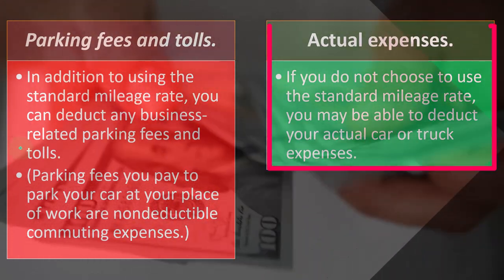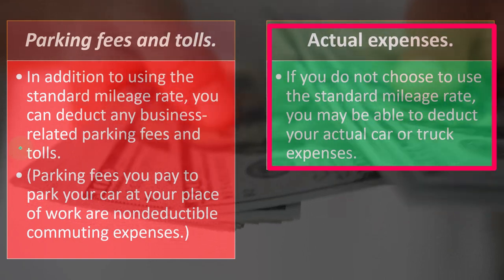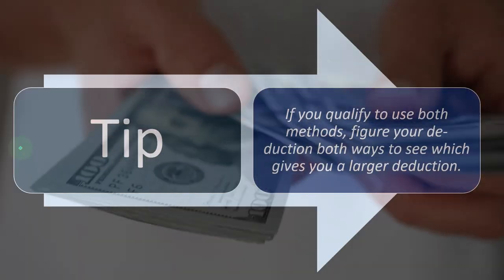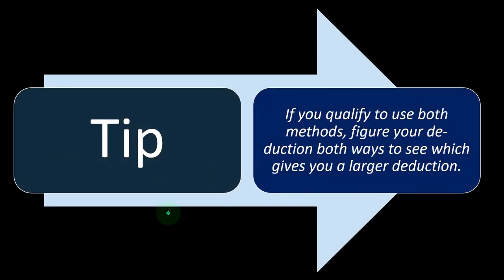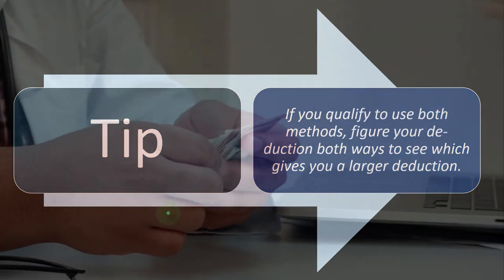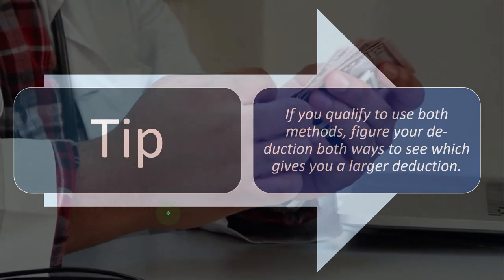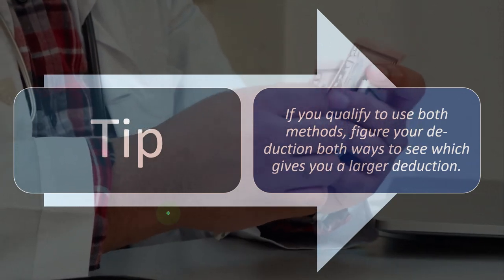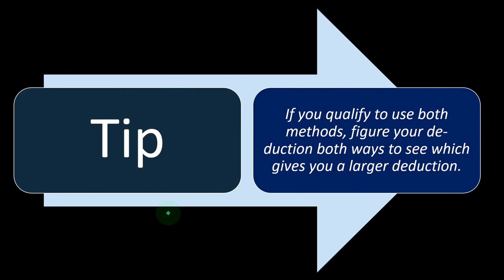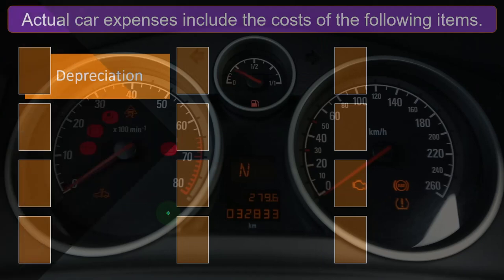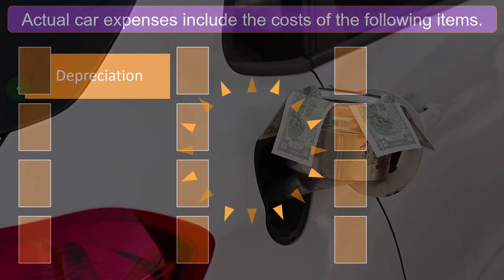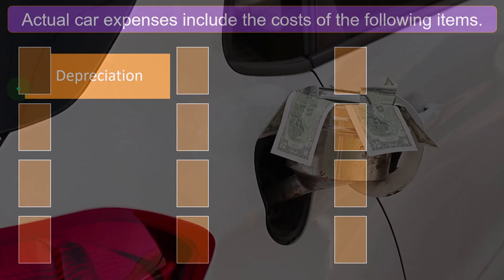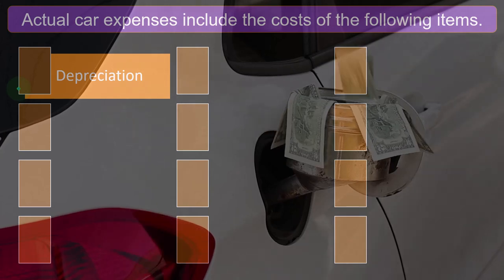Actual expenses: if you do not choose to use the standard mileage rate, you may be able to deduct your actual car or truck expenses. You'd ask your accountant to figure out which is better — if you qualify to use both methods, figure your deduction both ways to see which gives you a larger deduction. Oftentimes the actual write-off method will give you the bigger deduction, but that may only happen in year one and you're going to be using the car for five to ten years. So you want to think about what the best deduction would be over the lifespan of the car, which gets a little complicated. Once you figure it out, whether you're using the actual method or the mileage method will influence how you track your miles within QuickBooks.